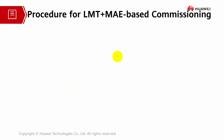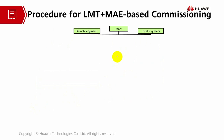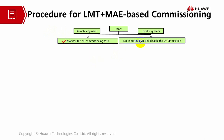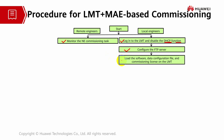The procedures for LMT and MAE-based commissioning also happen between remote engineers and local engineers, continuing from what we discussed earlier. After you start the commissioning task, the remote engineer will monitor the NE commissioning task. At the same time, the local engineer will log into the LMT and disable the DHCP switch so that there is no interruption to the transport during commissioning.